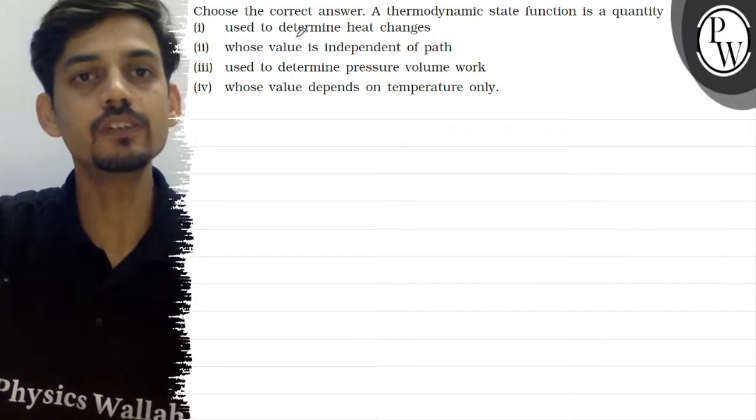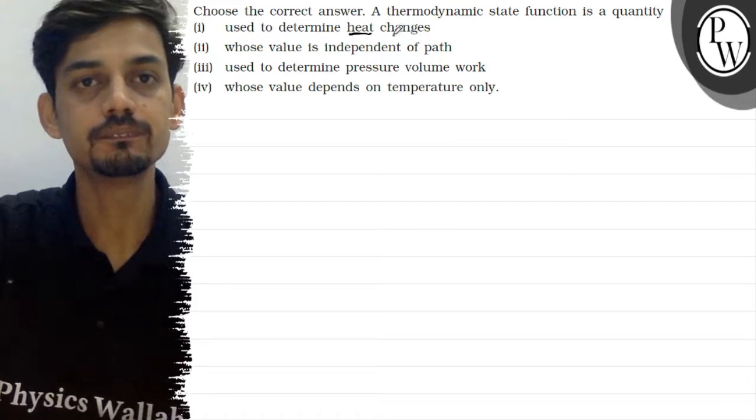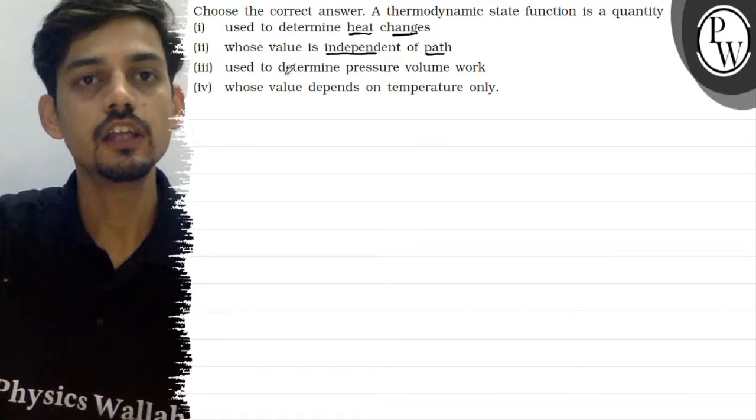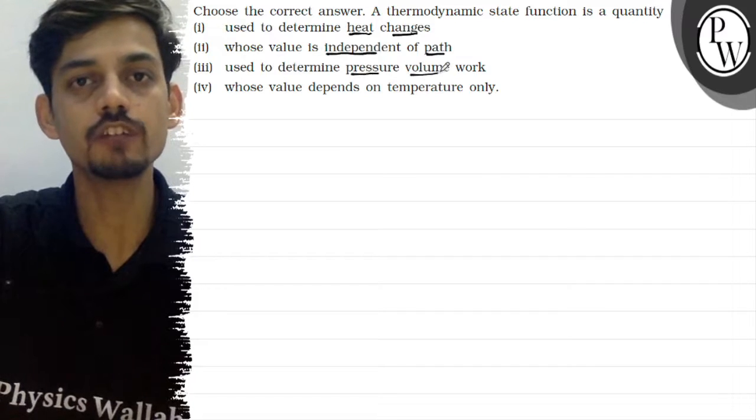The options are: used to determine heat changes, whose value is independent of path, used to determine pressure volume work, whose value depends on temperature only.